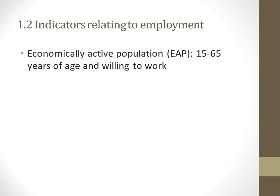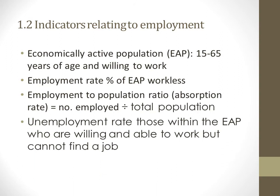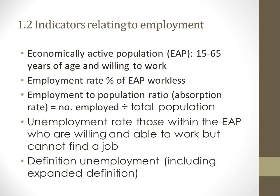Indicators related to employment: the economically active population (EAP) refers to people between the ages of 15 and 65 who are willing to work. The employment rate is the percentage of economically active people who are employed. The employment-to-population ratio, or absorption ratio, is the number of employed people divided by the total population. Unemployment refers to those within the EAP who are willing and able to work but cannot find a job.